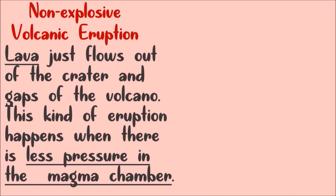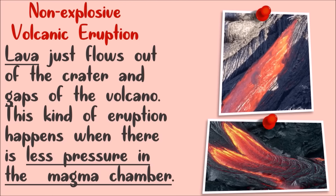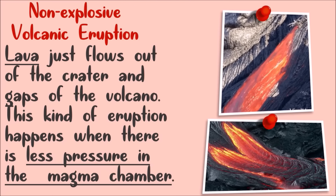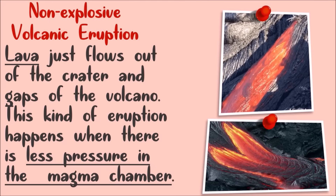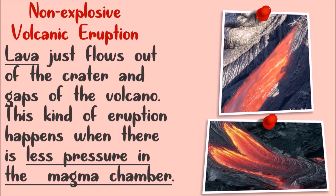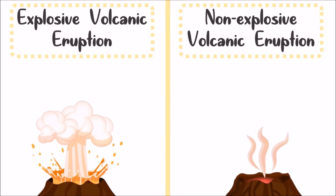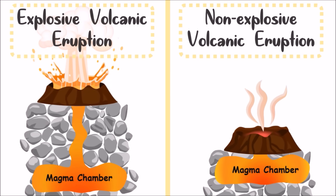In a non-explosive eruption, lava just flows out of the crater and gaps along the side of the volcano. This kind of eruption happens when there is less pressure in the magma chamber. If the magma chamber is located nearer the Earth's surface, there would probably be less pressure.